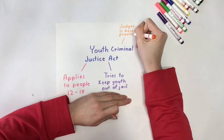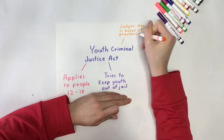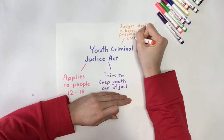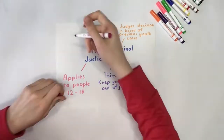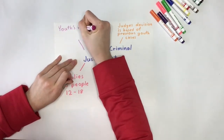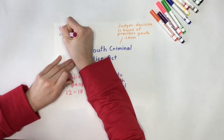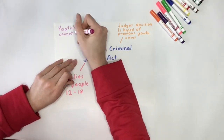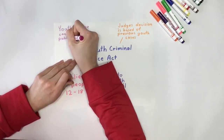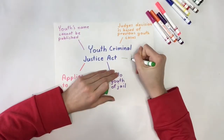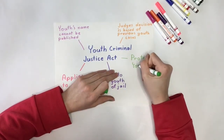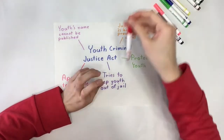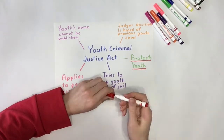When a judge is sentencing a guilty youth, they base their decision on previous youth cases. A youth's sentence should never be more severe than it would be for an adult in the same situation. Furthermore, when a youth is convicted, their name cannot be published. This is done to protect the youth and make it easier for them to return to their community.